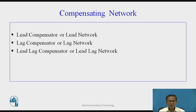Compensating networks. Basically, there are three types of compensating networks: lead compensator, also called a single lead network; lag compensator; and lead-lag compensator.